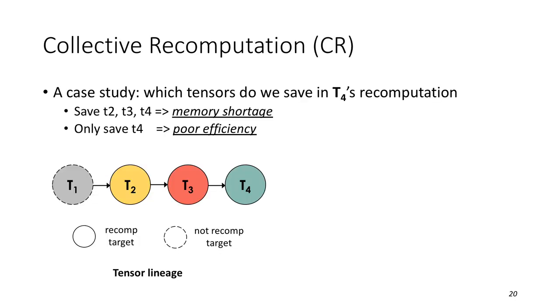For recomputation, we propose collective recomputation to improve efficiency. Let's start with a simple case. The lineage is from T1 to T4, in which T2, T3 and T4 are recomputation targets. After releasing these three tensor's memory in forward propagation, T4 will be first recomputed. At this point, T2 and T3 are not triggered to start recomputation. So, T4 will recompute from T1. Let's assume T1 is in GPU memory now. And generate T2 and T3 during this process. Due to that, T2 and T3 will be needed in the next.